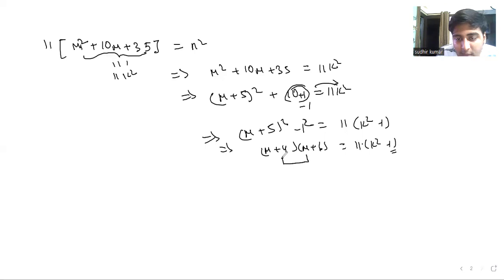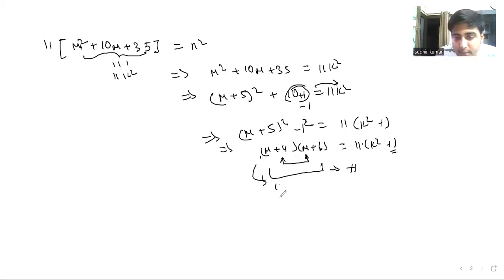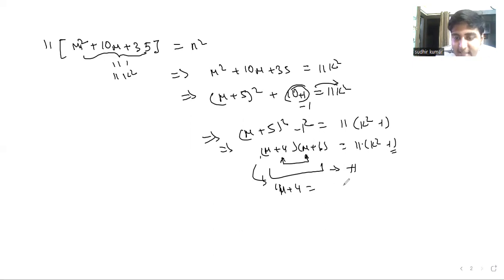Now (m+4) and (m+6) differ by 2, so both cannot be multiples of 11 simultaneously — the next multiple after m+4 would be m+15, not m+6. Therefore exactly one of them must be a multiple of 11, giving us m+4 ≡ 0 (mod 11) or m+6 ≡ 0 (mod 11).